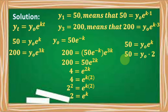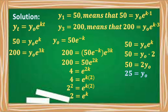Using the equation 50 = y₀ · e^(kt) and knowing that e^(k) = 2, we replace e^(k) with 2 to get 50 = y₀ · 2, or 50 = 2 · y₀. Dividing both sides by 2, we get y₀ = 25. Therefore, the original population is 25.